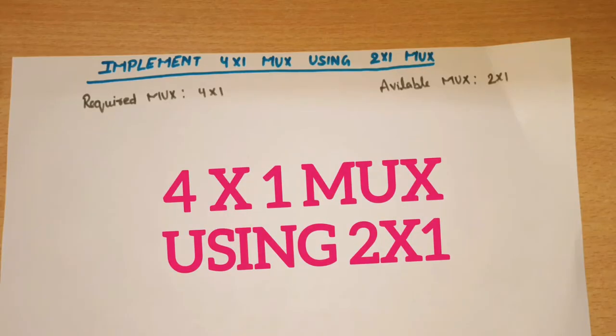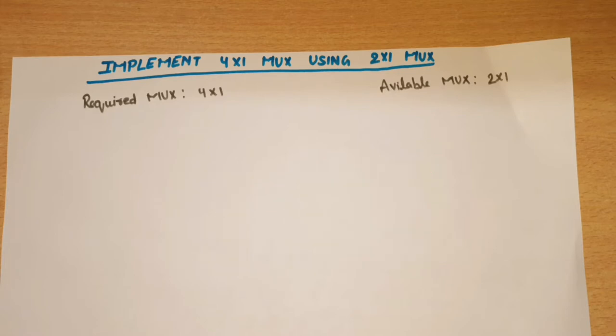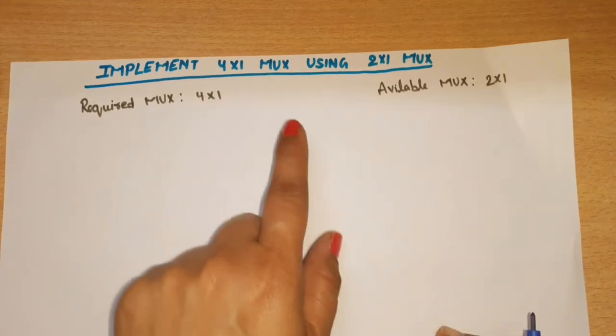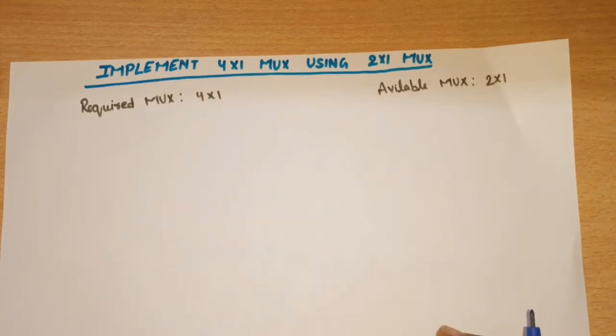In this video, I am going to discuss how we can implement one type of MUX using another type of MUX. I have taken an example: implement 4-to-1 MUX using 2-to-1 MUX, which means the required MUX is 4-to-1 and what we have available is 2-to-1 MUX.